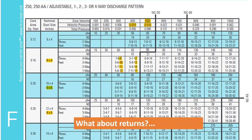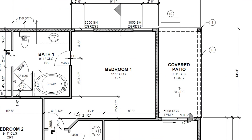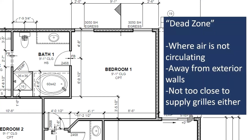All this information so far has been for supply grills, but what about the returns? To decide where to place a return grill in a room, we want to look for what's called a dead zone — an area where air in the room is not really circulating as much. We also want to stay away from exterior walls, as we don't want to bring hot air back to the air handler. Although it seems like that might make sense, it would actually cause the unit to work a lot harder to cool down the air, making it less efficient.